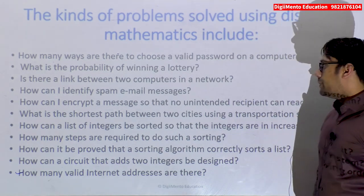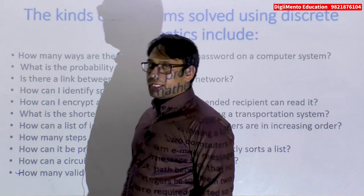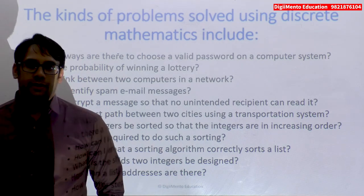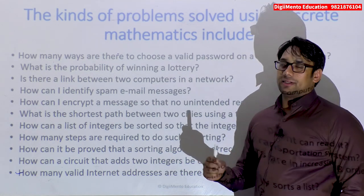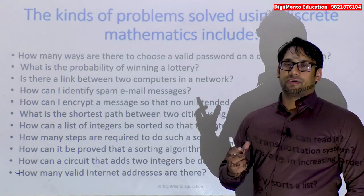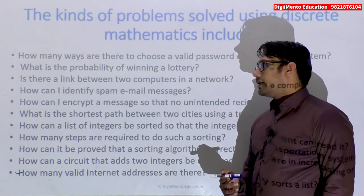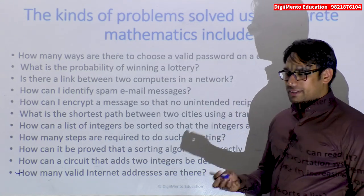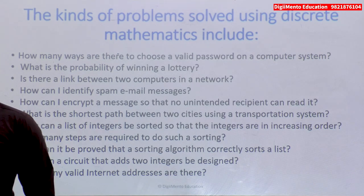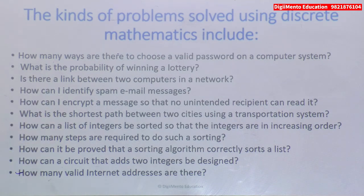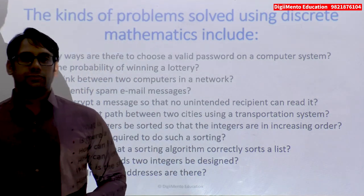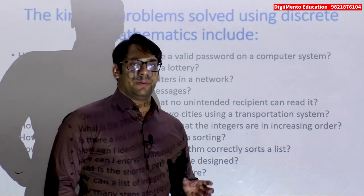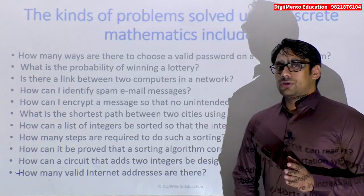Next, is there a link between two computers in a network? To define the link, we need the concept of IP addresses. We solve IP address problems with the help of discrete mathematical structures — for example, AND operations, OR operations, permutations and combinations to assign addresses. Even in computer networks, discrete mathematics is used widely. You can also ask: how can I identify spam email messages?